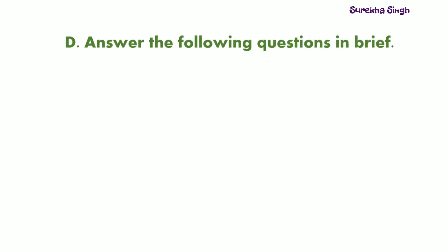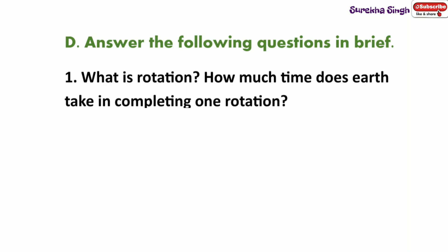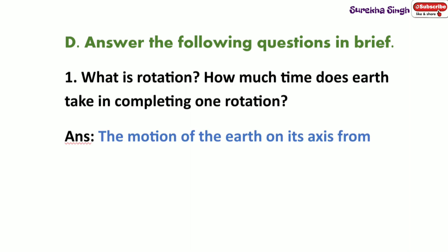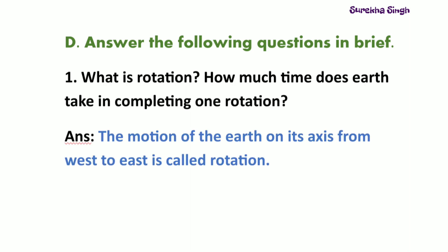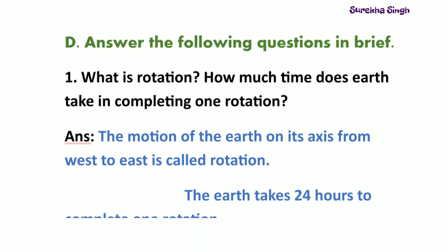Question D: Answer the following questions in brief. Question 1: What is rotation? How much time does the earth take in completing one rotation? The motion of the earth on its axis from west to east is called rotation. The earth takes 24 hours to complete one rotation.